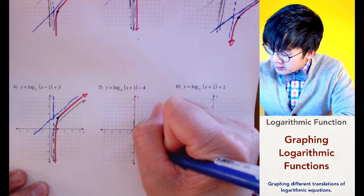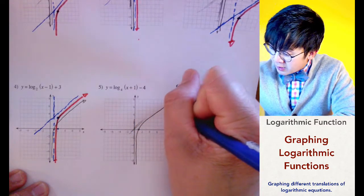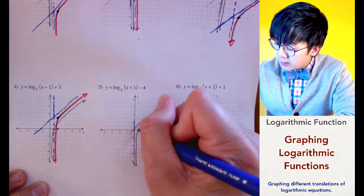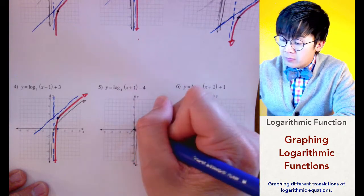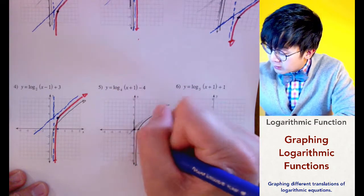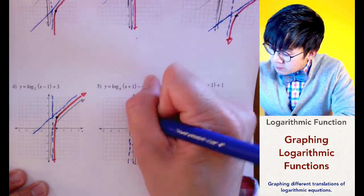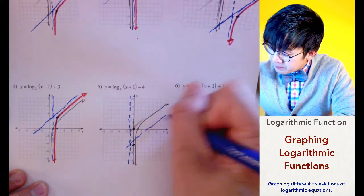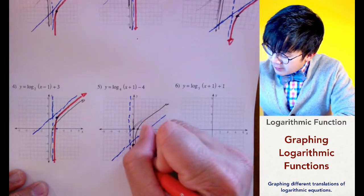I always graph my log of x to give me a guide for the function so that when I translate it, it's not too confusing. With x plus 1, we go 1 to the left, and then minus 4, so down 4. We draw the vertical asymptote, the slant asymptote, and then the graph of our function.